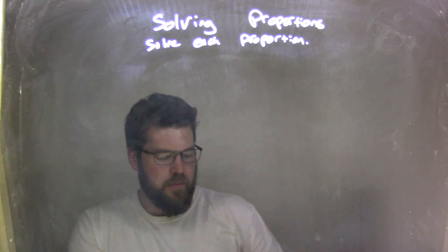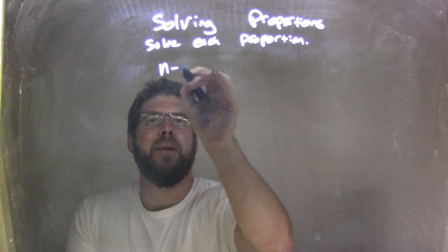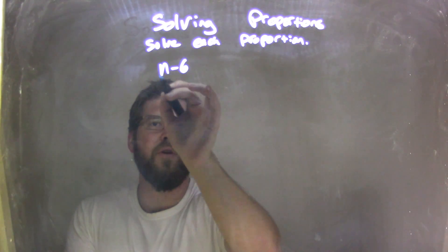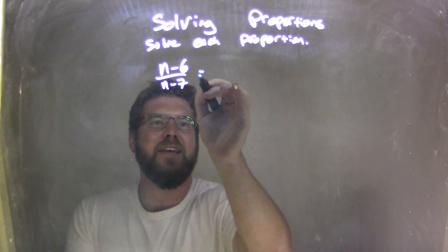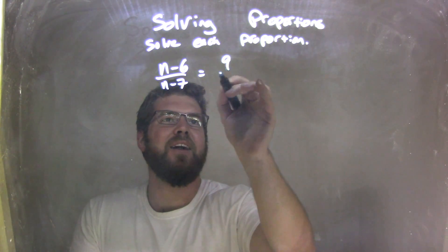So if I was given this proportion here: n minus 6 over n minus 7 equals 9 over 2.